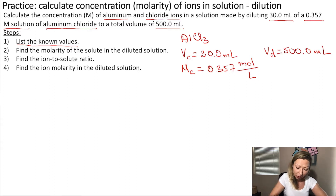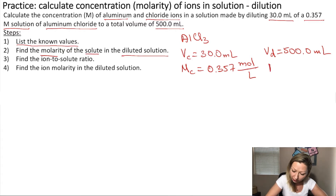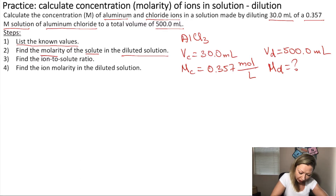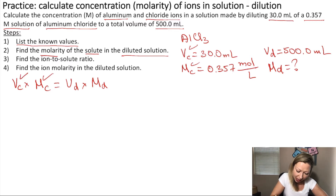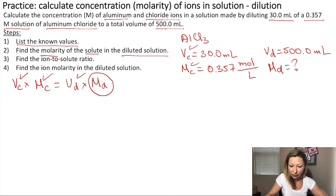Now let's find the molarity of the solute in the diluted solution — we are looking for M sub d. We can use the following formula: the volume of the concentrated solution multiplied by the molarity of the concentrated solution equals the volume of the diluted solution times the molarity of the diluted solution. We know all the information about the concentrated solution and also the volume of the diluted solution, so we solve for M sub d.